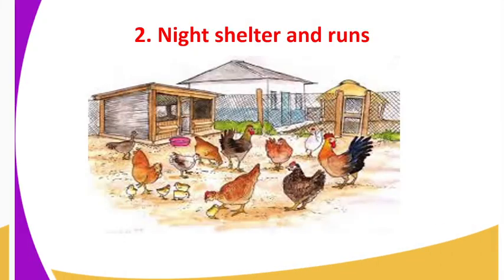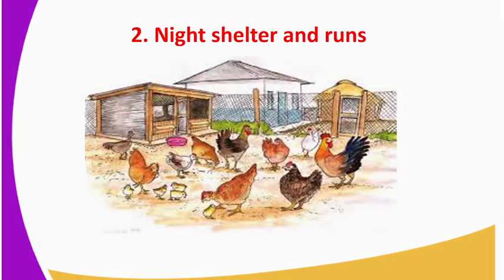The second type of house is the night shelter and run. You can see there is an image here of various birds, and there are birds which are brooding here, taking care of their young ones. During the day, they normally eat in the compound, and during the night, they go back to their houses. The compound is what we refer to as the run.